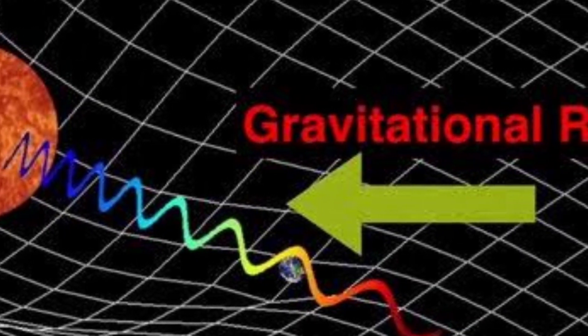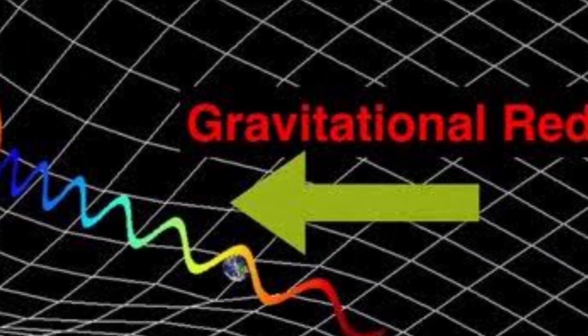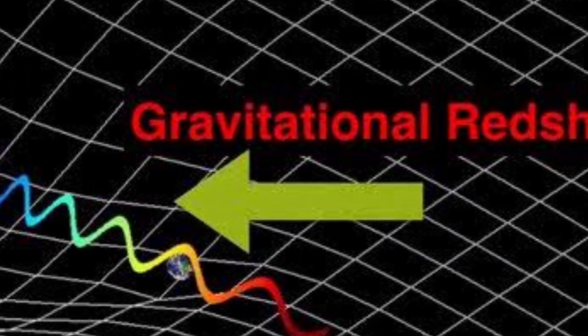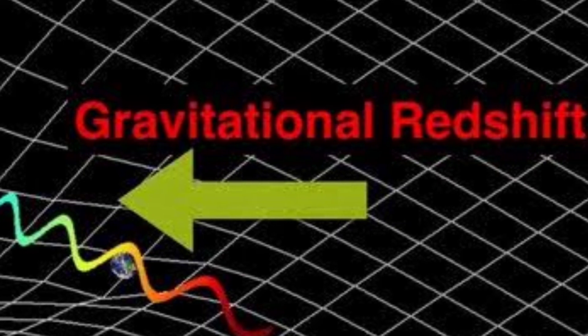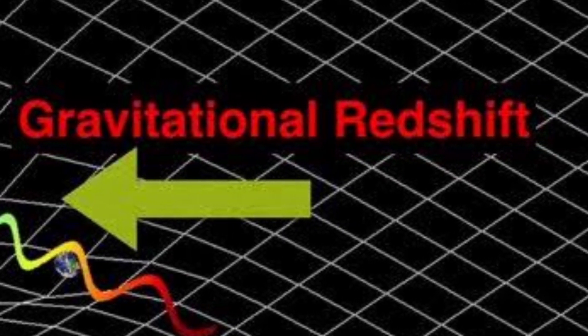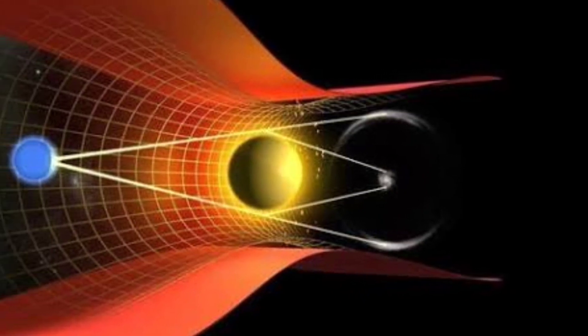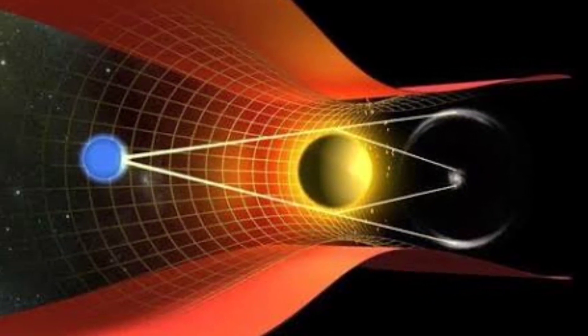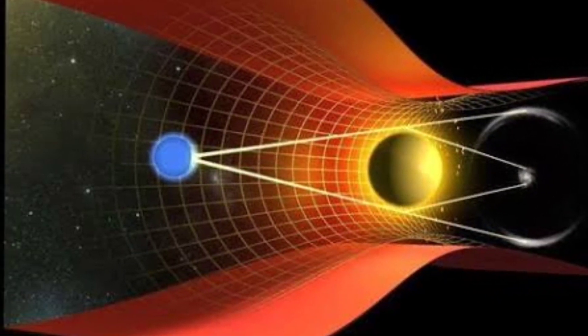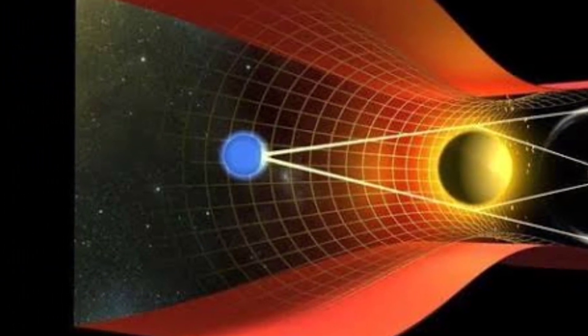This phenomenon was famously confirmed during the 1919 solar eclipse when British astronomer Arthur Eddington observed that starlight passing near the sun was indeed deflected by the sun's gravitational field. This observation provided crucial evidence for the validity of Einstein's theory.